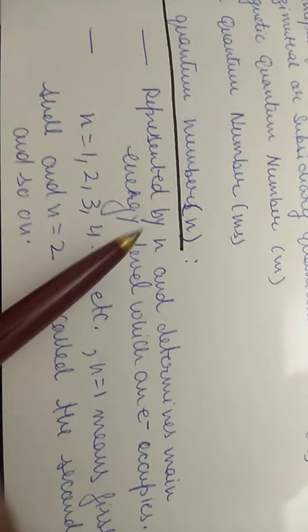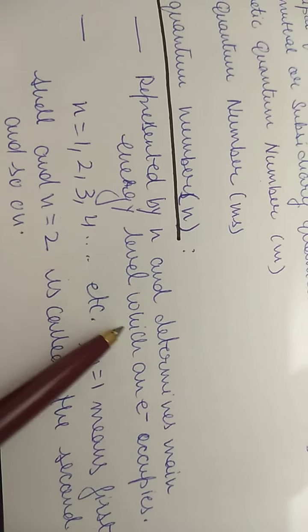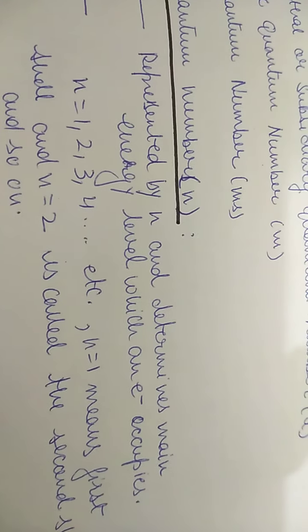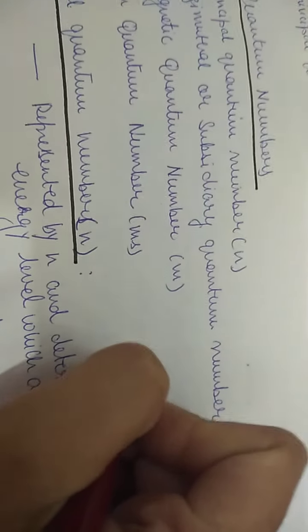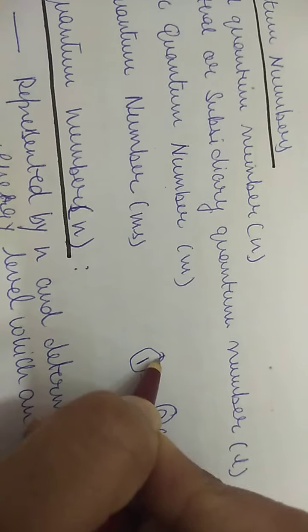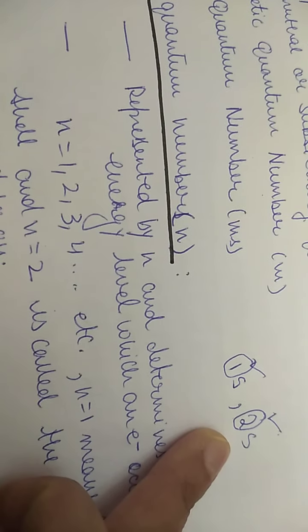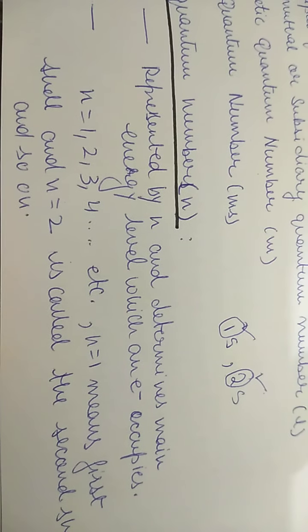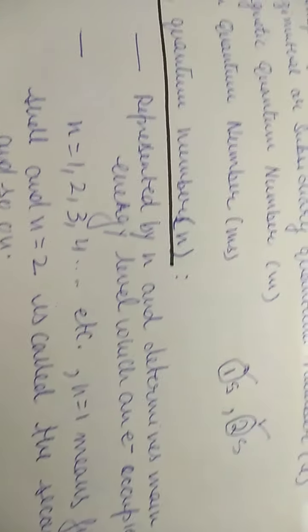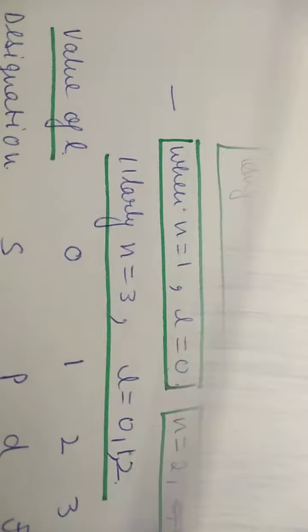The principal quantum number is represented by n. It determines the main energy level which an electron occupies. For example, in 1S or 2S, the number 1 or 2 represents the principal quantum number — the main or principal energy level. n can be equal to 1, 2, 3, 4, etc. n = 1 means first shell, n = 2 means second shell, and so on.